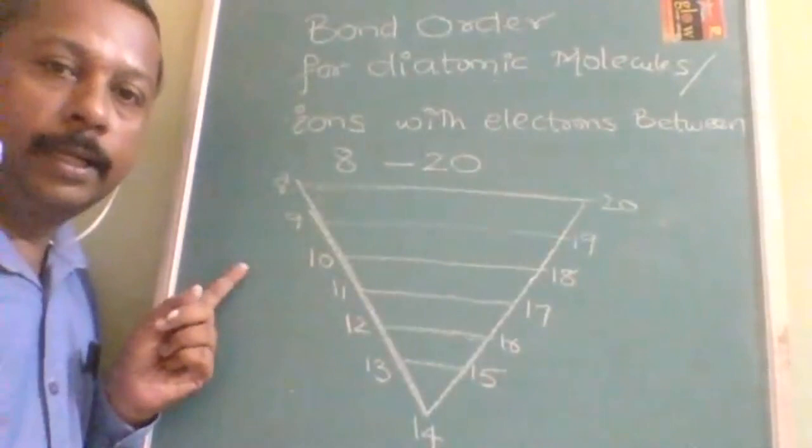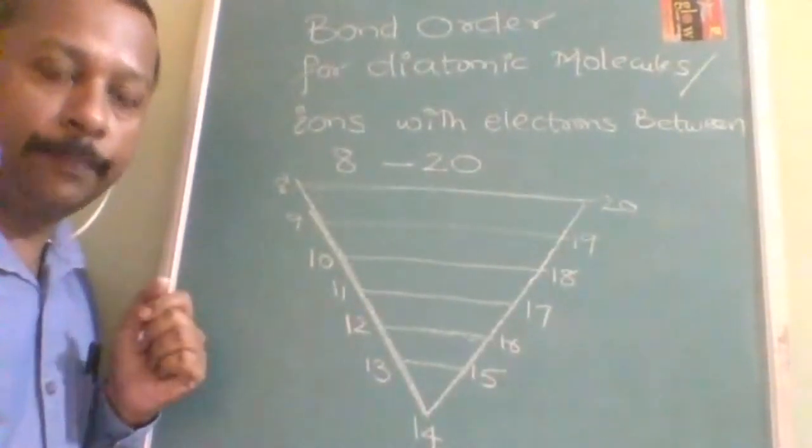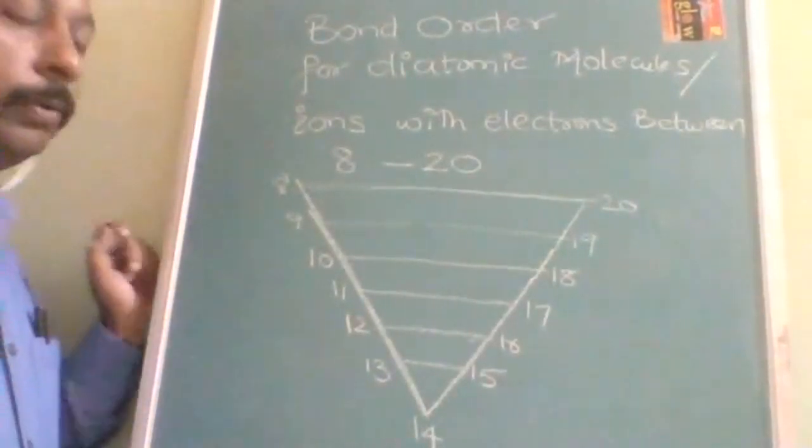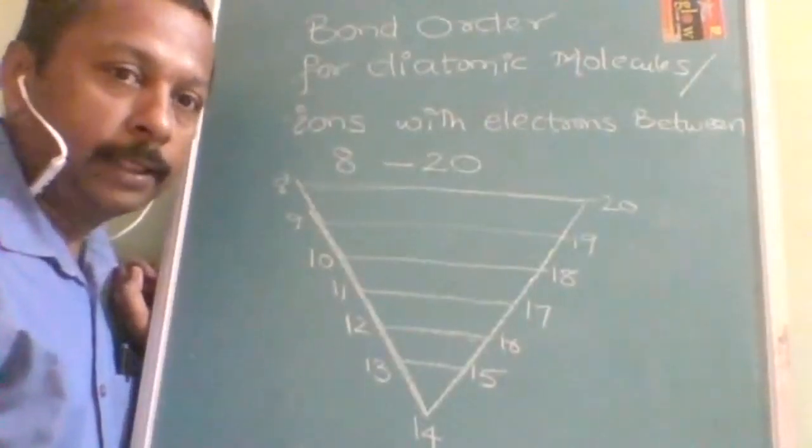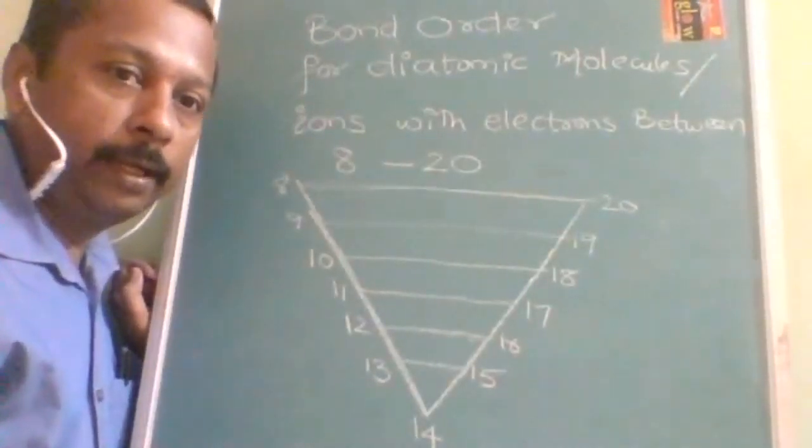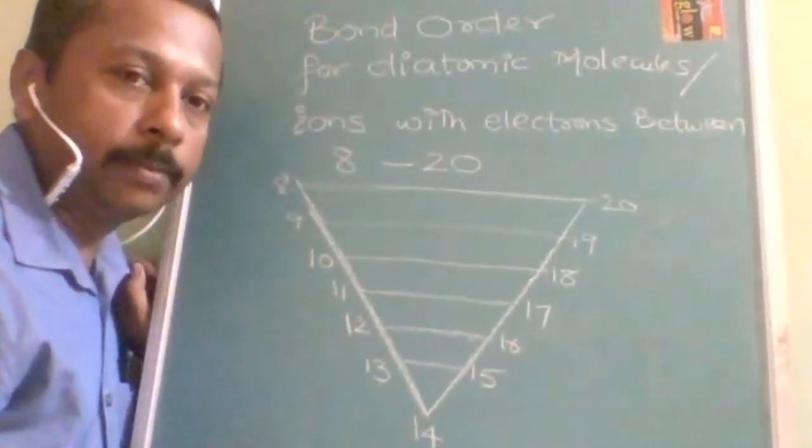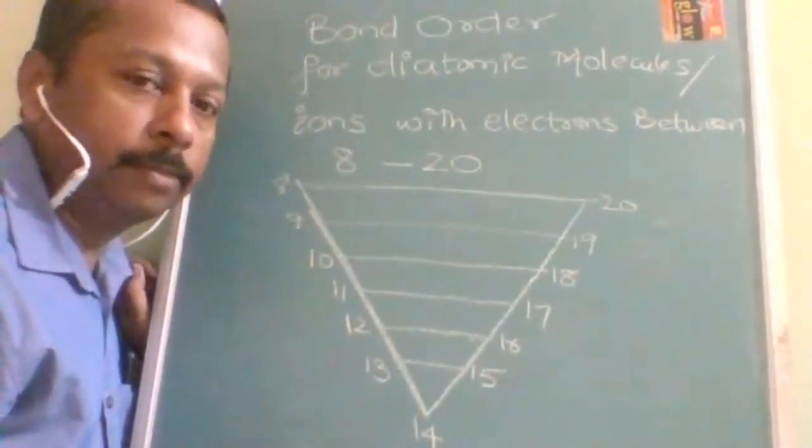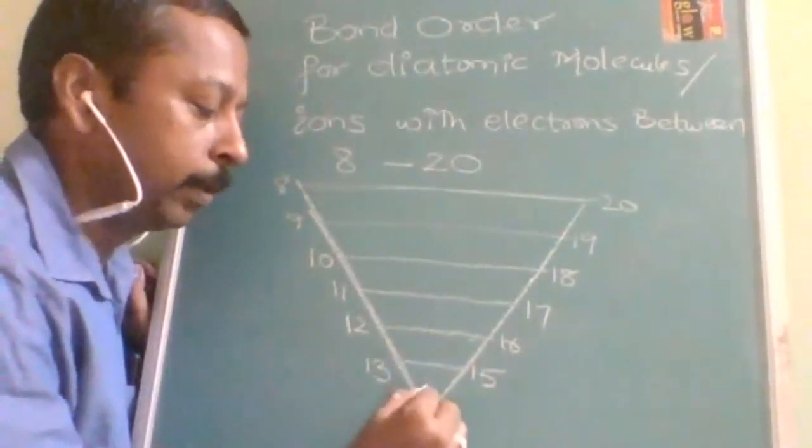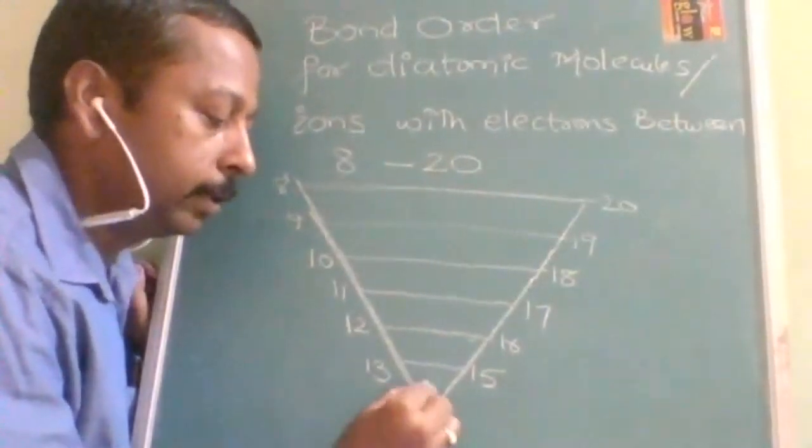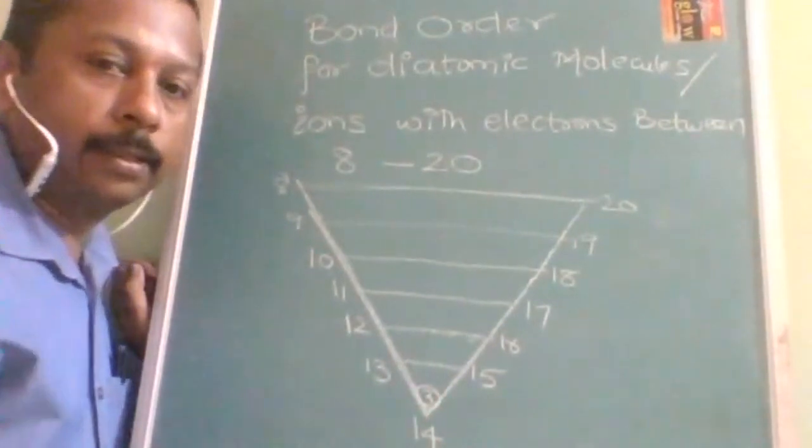OK. Now all of you must be aware that the maximum number of bonds between any two atoms, bonds between any two atoms will be 3. So this 14 means it is 3.